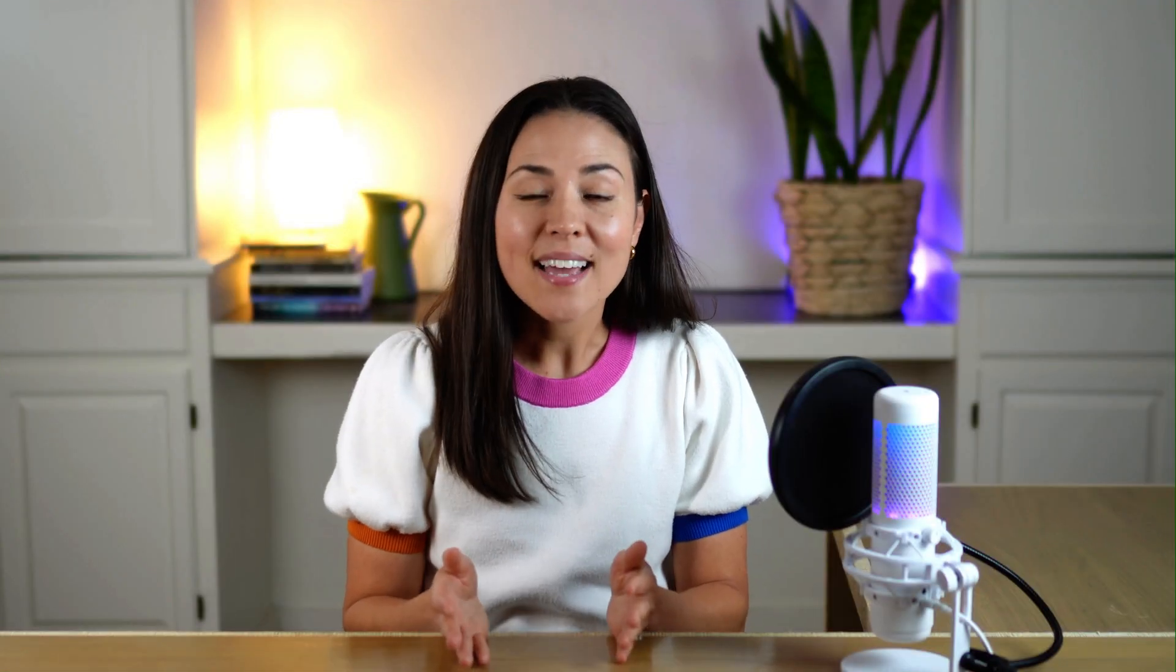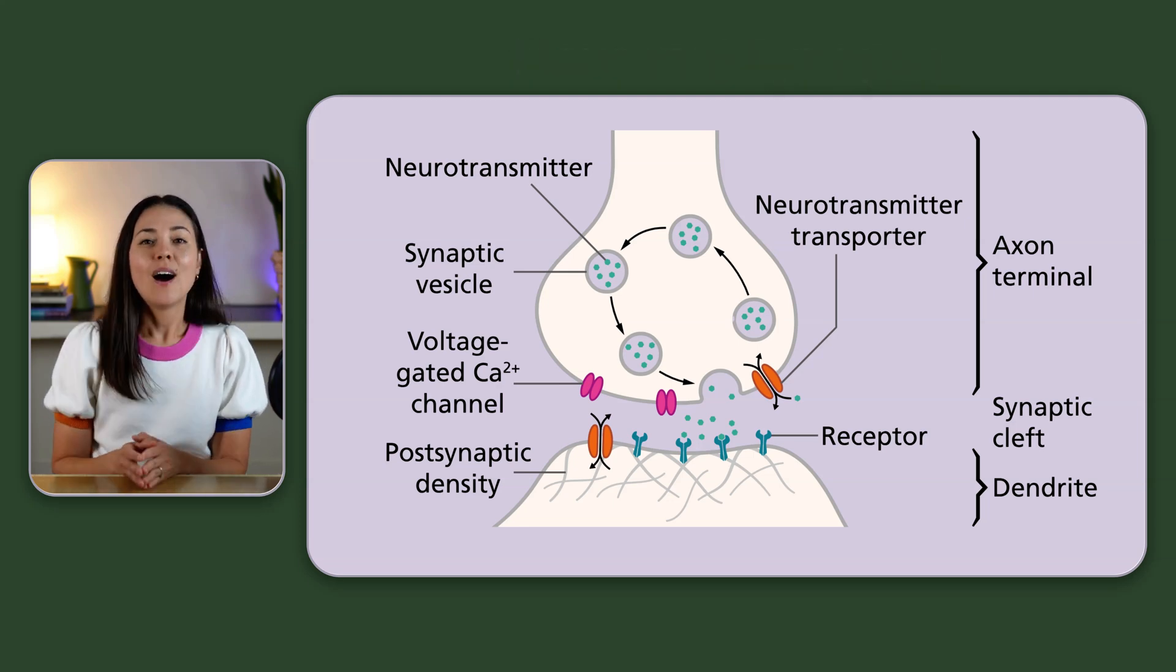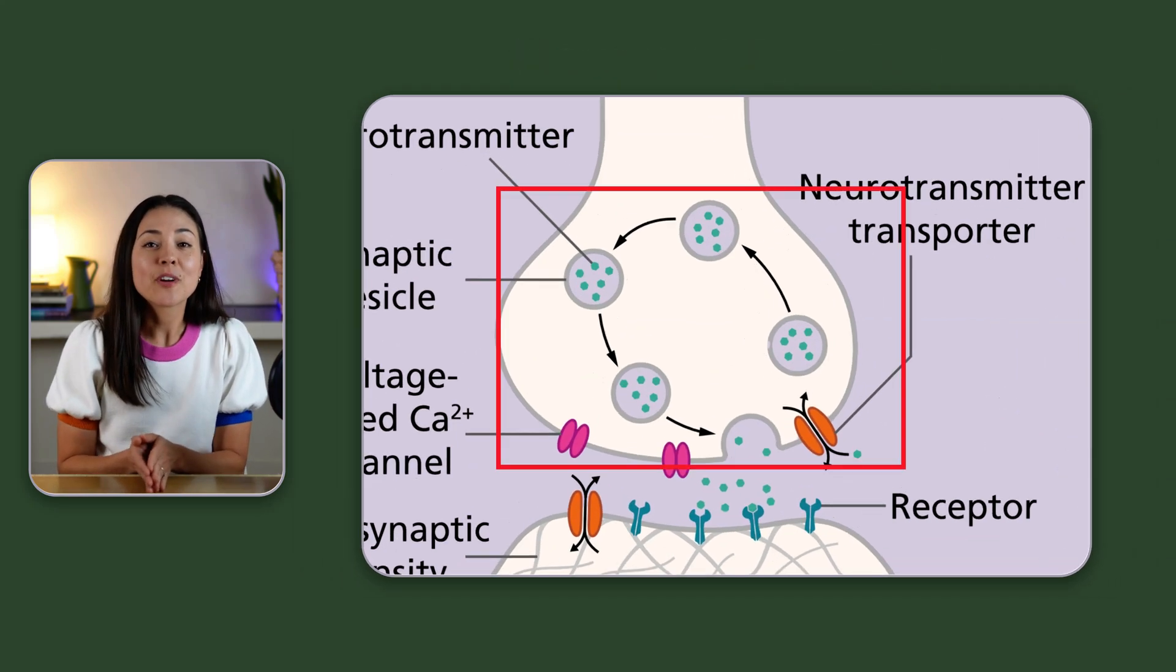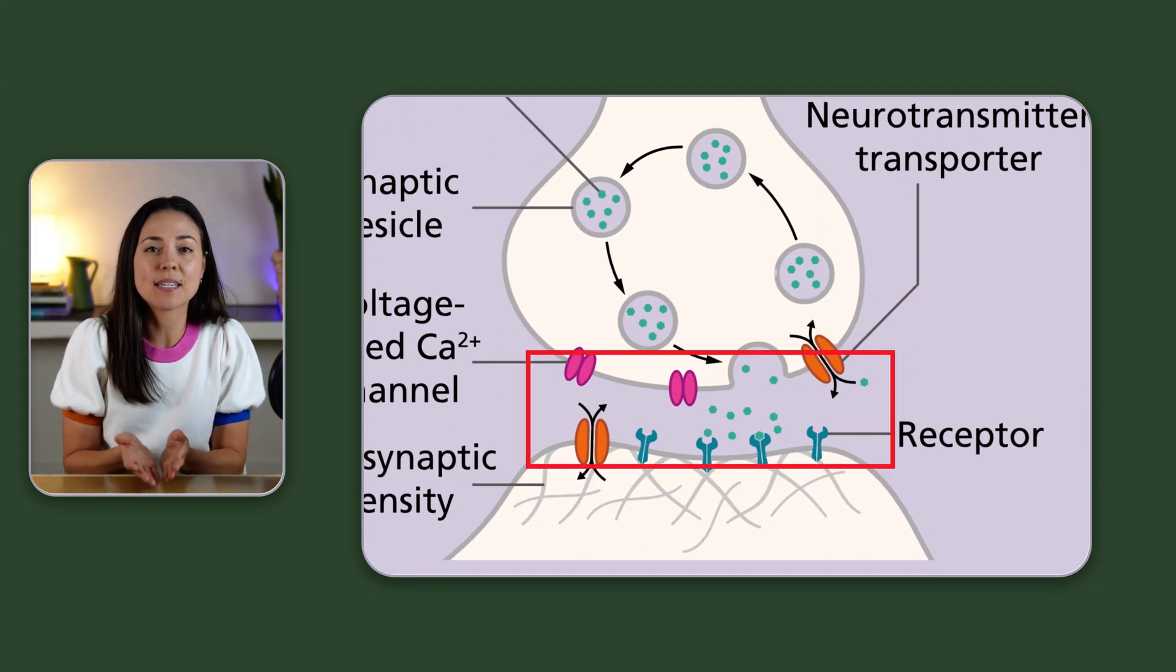So to understand why, let's first look at the neuronal synapse. The synapse is the tiny meeting point between two neurons. On one side, we have the presynaptic neuron. So this is the neuron that releases the neurotransmitters like serotonin into the gap, which is also known as the synaptic cleft.